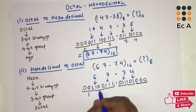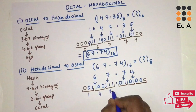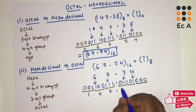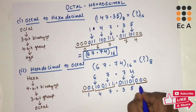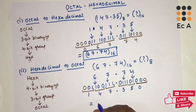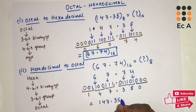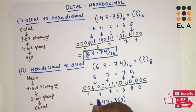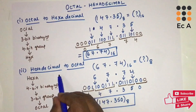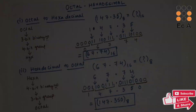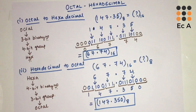Now let us write the equivalent octal number for each 3-bit group. 001 is 1, 100 is 4, 111 is 7, then after the point 011 is 3, 101 is 5, 000 is 0. So the octal equivalent is 147.350 base 8. This is the octal equivalent of the given hexadecimal number. Hope you have understood the topic, thank you.